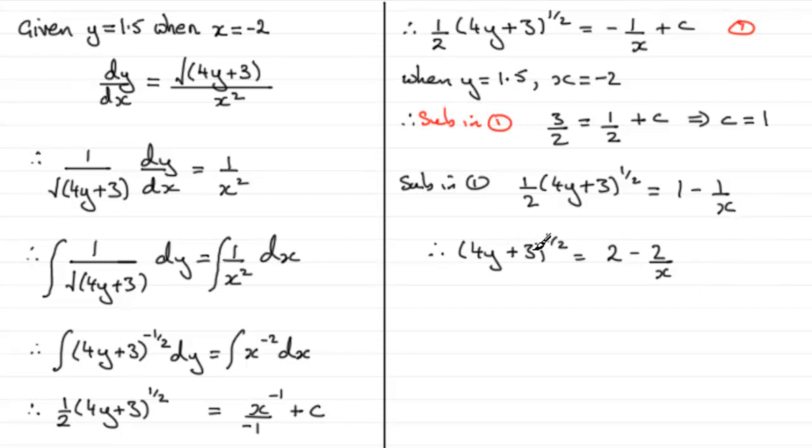What can we do next? Let's square both sides because we've got a square root here. Squaring both sides gives us 4y plus 3 equals 2 minus 2 over x all squared. Subtract 3 and then we've got 4y equals 2 minus 2 over x all squared minus the 3. And if we divide by 4, it would look better if we times both sides by a quarter. We'll get y equals a quarter of all of this answer: 2 minus 2 over x all squared minus 3.